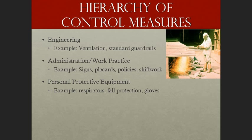Let's begin our conversation on PPE and assessments with the hierarchy of control measures. There are three: engineering control measures, administrative or work practice control measures, and control measures related to Personal Protective Equipment. Think about this like ranking your favorite sports team or a number one school. Engineering control measures — things like ventilation or implementing standard guardrails — are at the top of the list, number one.